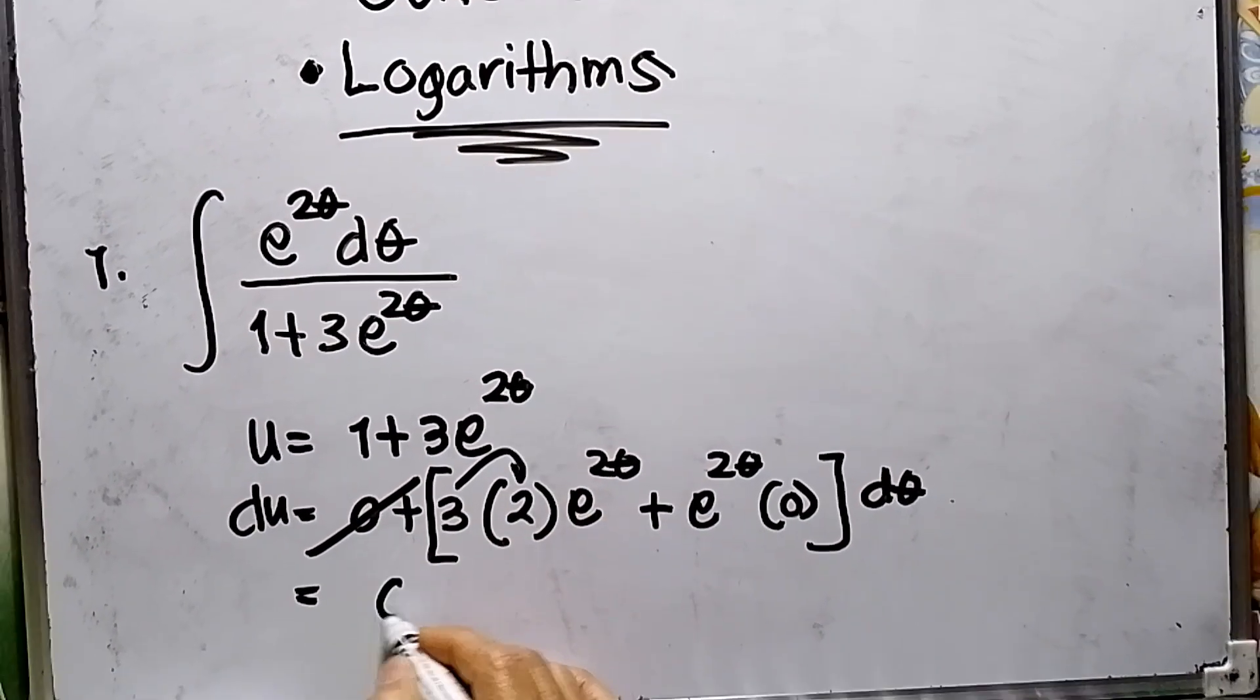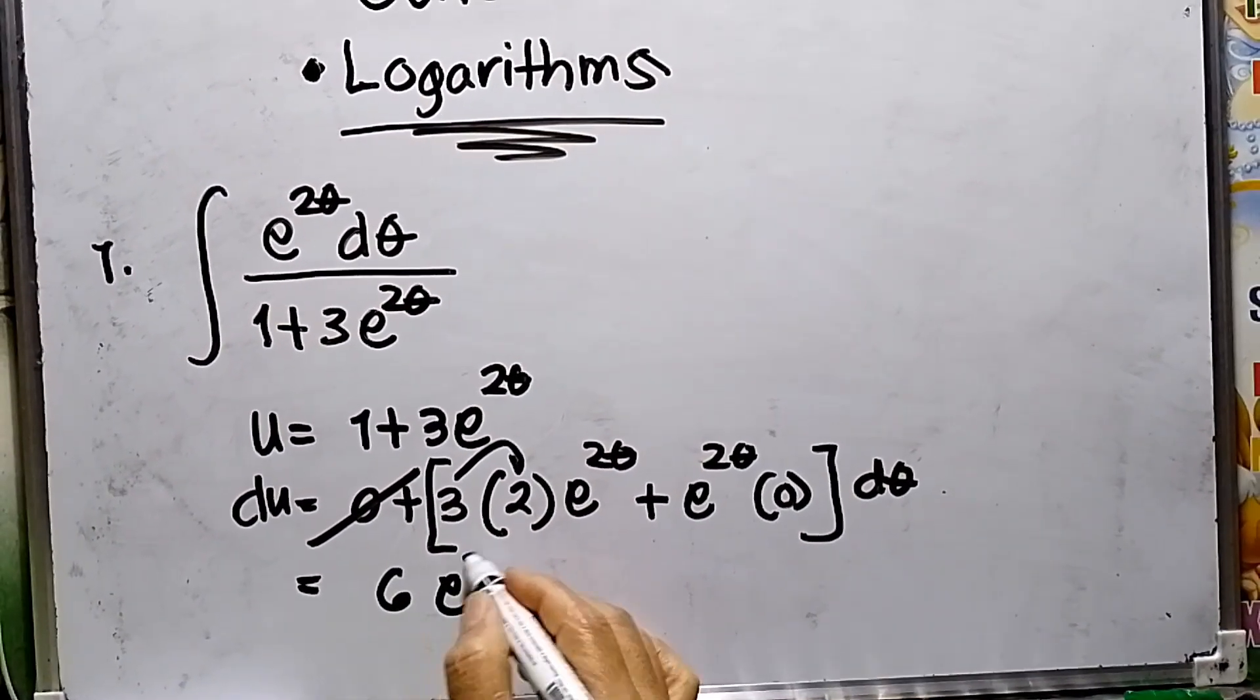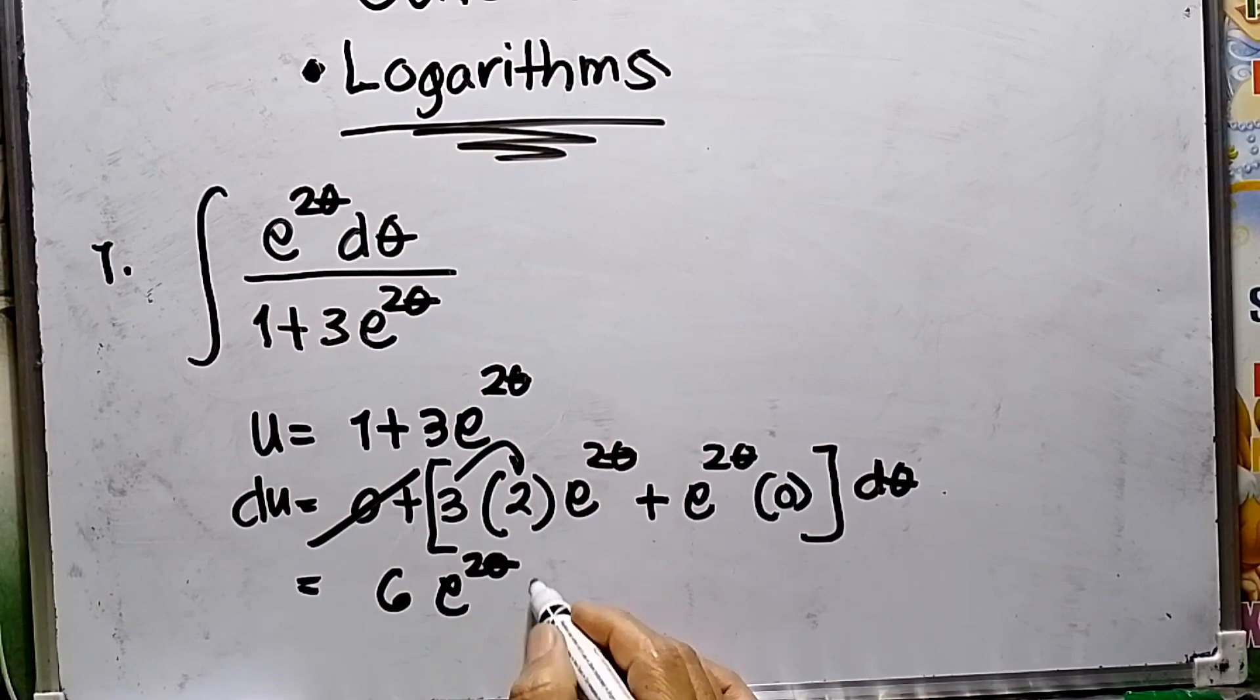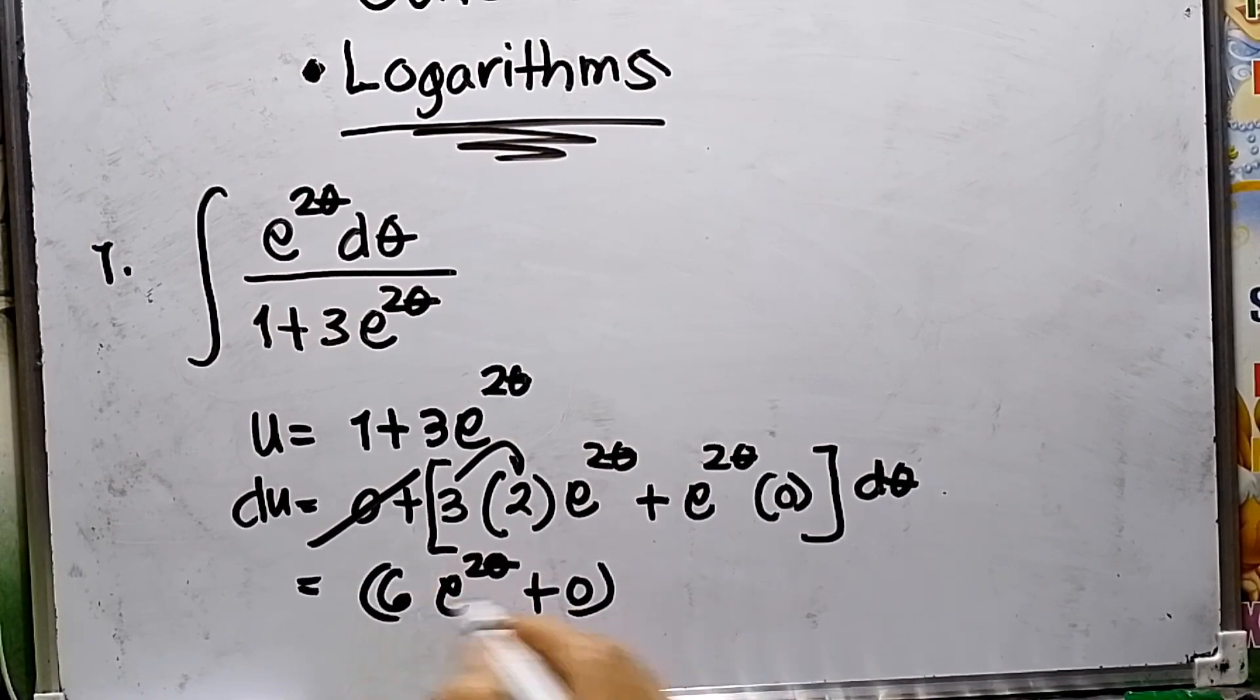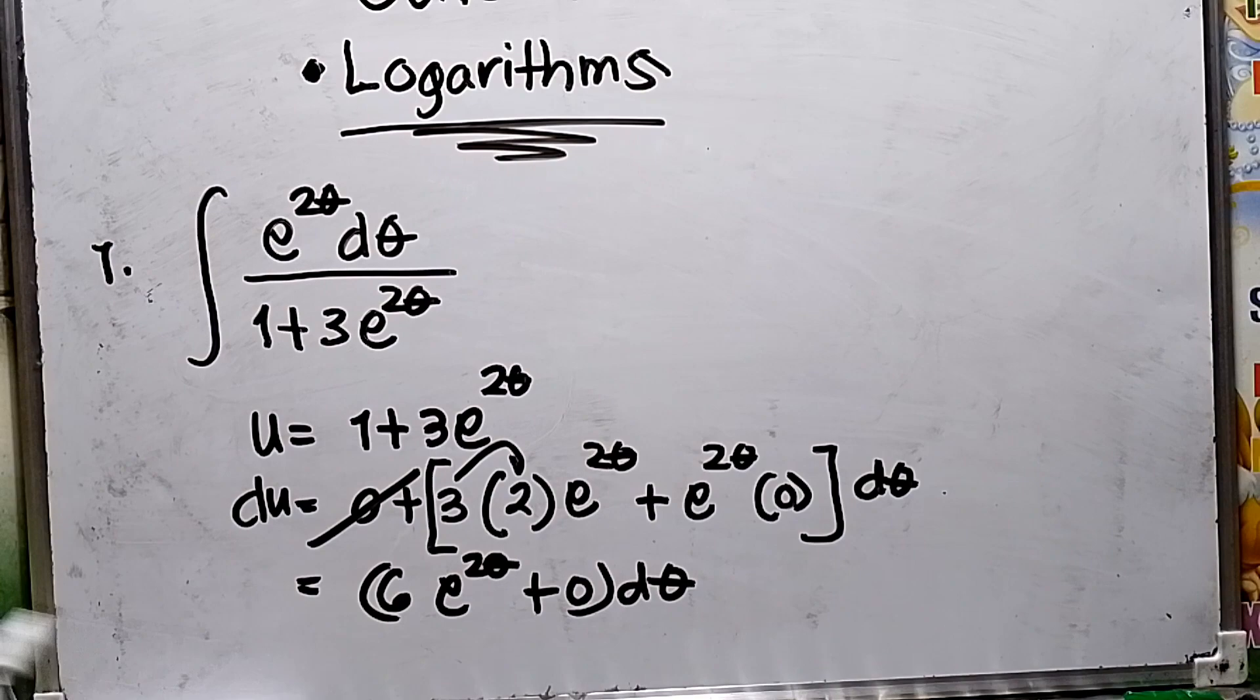So this will be multiplied, so I've got 6e to θ plus zero, then this will be dθ.